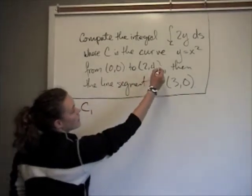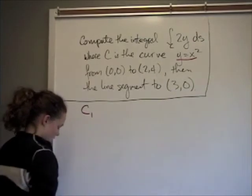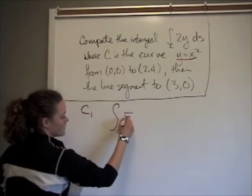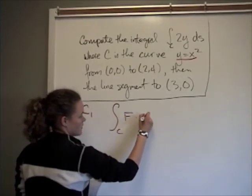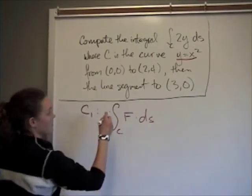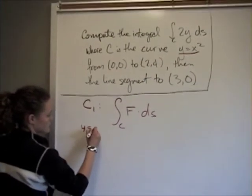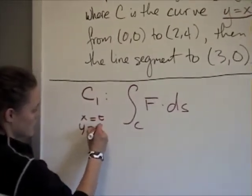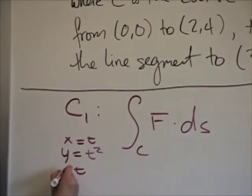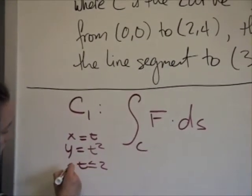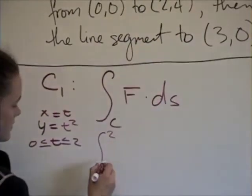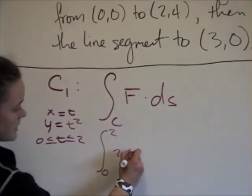Our first integral is going to be for C1, which is the curve y equals x squared. We're going to parameterize this curve so x equals t and y will equal t squared, from (0,0) to (2,4), so t is going to go from zero to two. Our integral goes from zero to two.